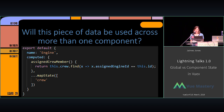Another question is: is this data going to be used across more than one component? In this case, the engine might need to know who the assigned crew member is, and we may need to pass in the crew so we can find the crew member assigned to the engine and display it there.